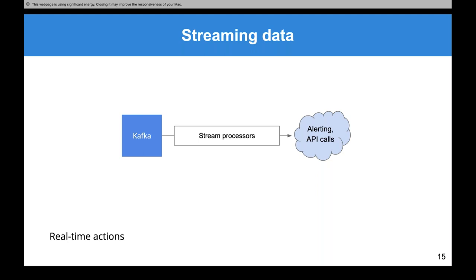The simplest thing you can do with stream processors like Spark Streaming and Flink is take real-time actions. Now we're actually getting real-time — we're not just dumping data into a data lake, we're actually taking action in real-time. For example, sending an API call or alert whenever there's an error rate above a certain percent. Your application sends data to Kafka, your stream processor looks at it, and in real-time can send out alerts or make API calls to other systems. We've built something real-time — this is pretty cool. It's still not really analytics, but we're getting there.